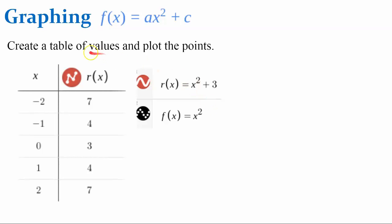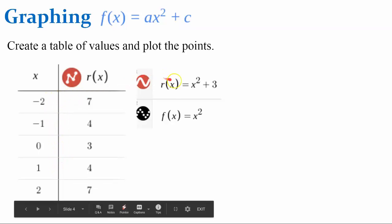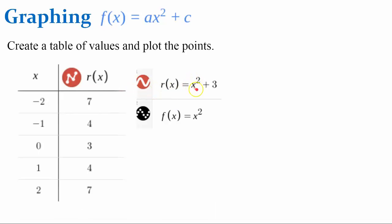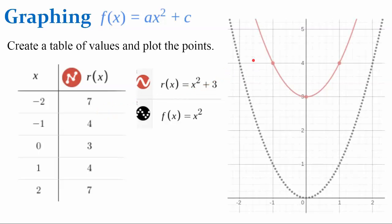Here's our table for function r. I picked the inputs negative 2, negative 1, 0, 1, and 2. We evaluate by plugging each value in for x. For example, negative 2 squared is 4, and 4 plus 3 is 7. Here are our points plotted.